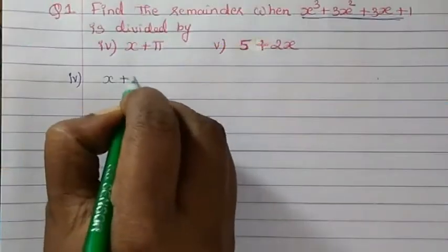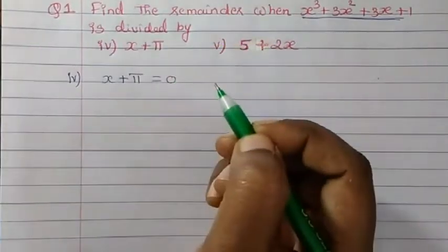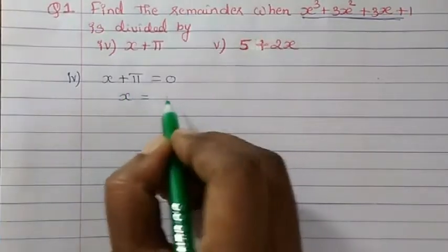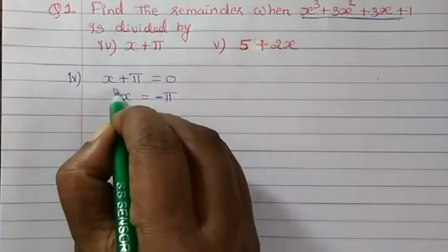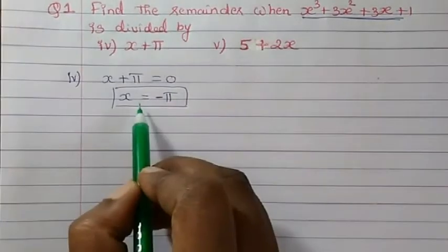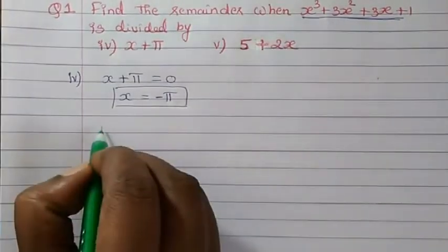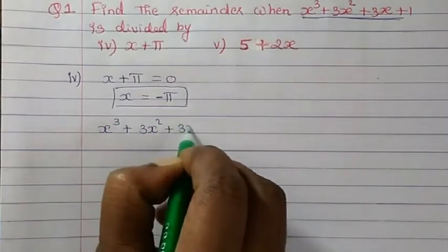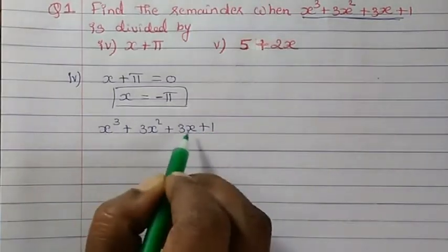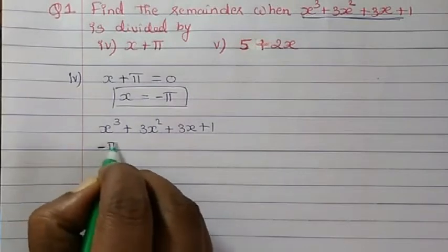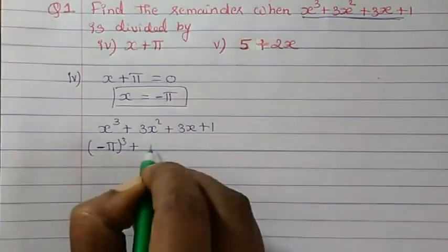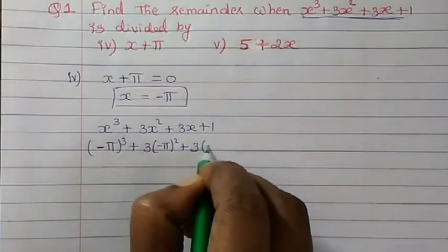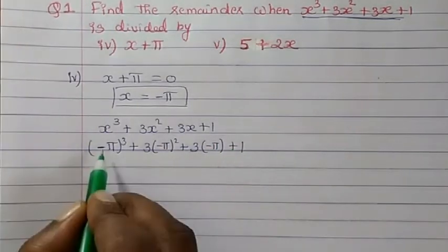For the 4th one, we have x + 5. We write it as equal to 0. We keep x on one side, so plus 5 comes to the other side and becomes minus 5. So x = -5 is our x value. We apply this in the polynomial x³ + 3x² + 3x + 1. In place of x we write -5: (-5)³ + 3(-5)² + 3(-5) + 1.